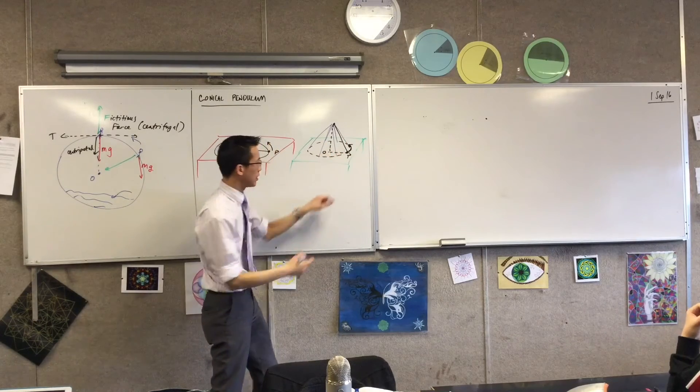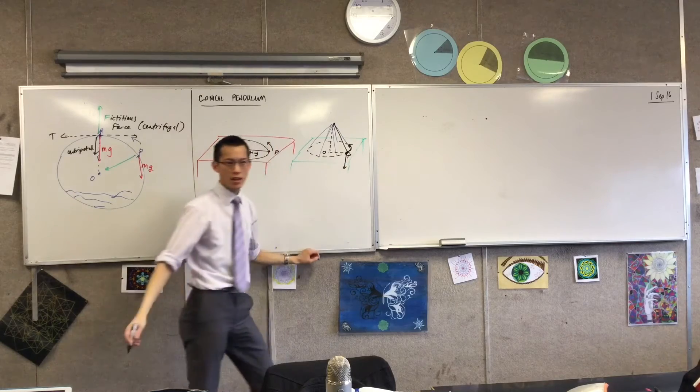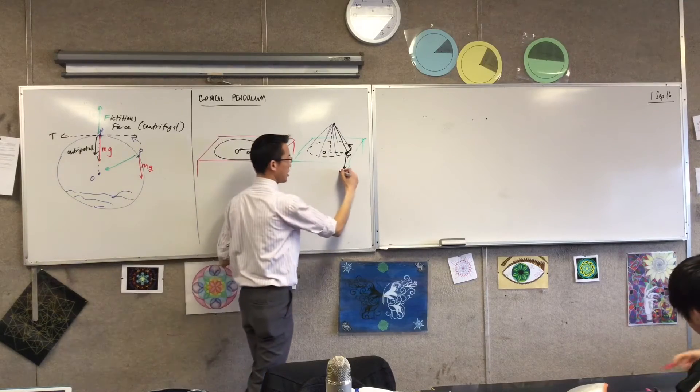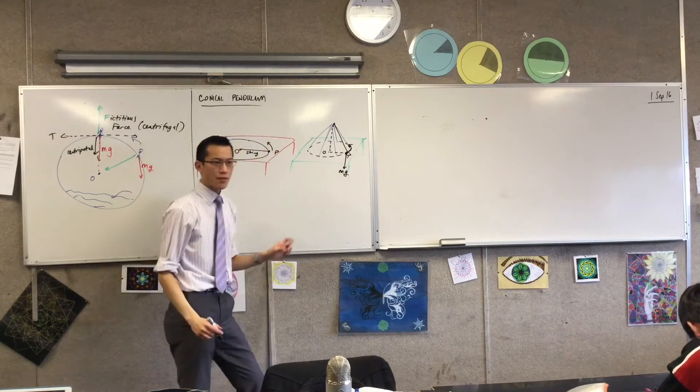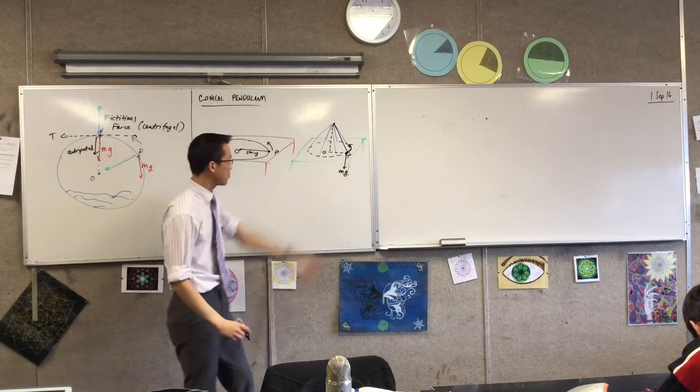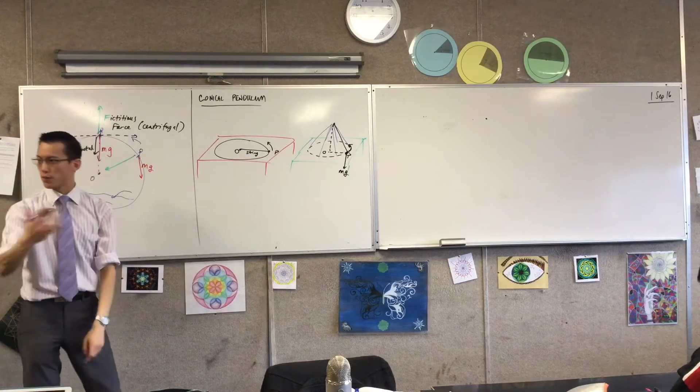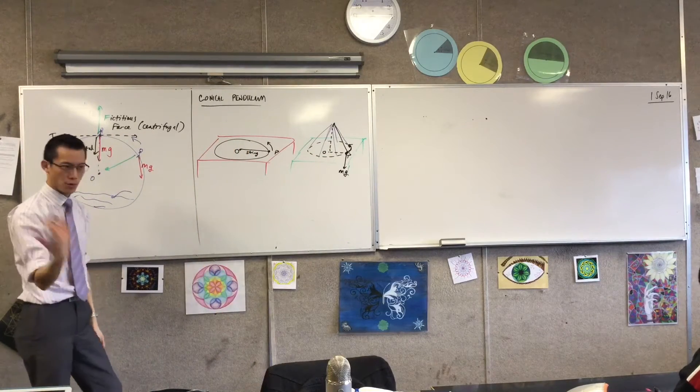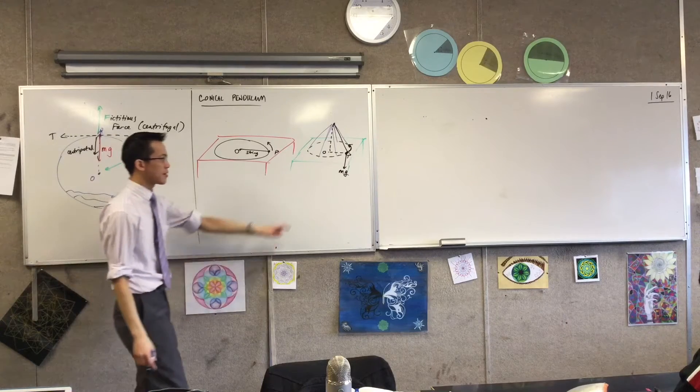So what I'm going to add on to here is that I've got a weight force pulling down, mg. I've got a reaction force coming up off the table. And then I've got the resultant force that's horizontally, which is moving this thing around.